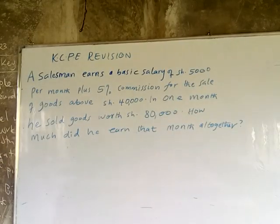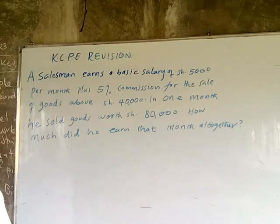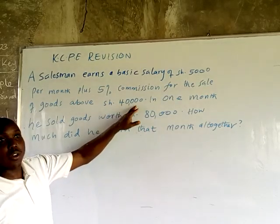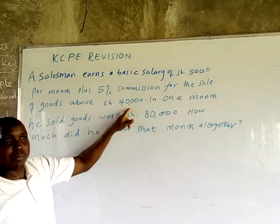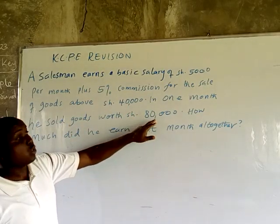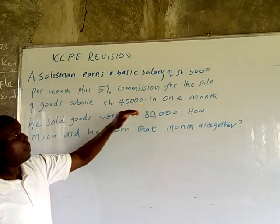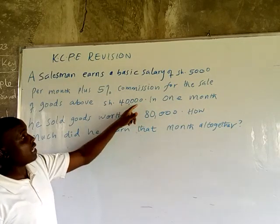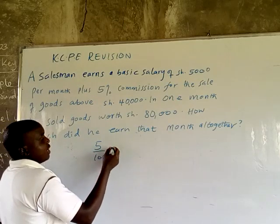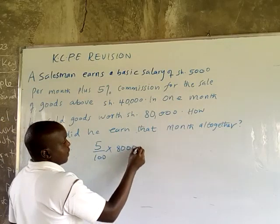An assessor earns a basic salary of 5,000 shillings per month plus a 5% commission on sales of goods above 40,000 shillings. In one month they sold goods worth 80,000 shillings. How much did they earn that month in total? There is a basic salary and a commission. The commission is only earned on sales above 40,000 shillings.